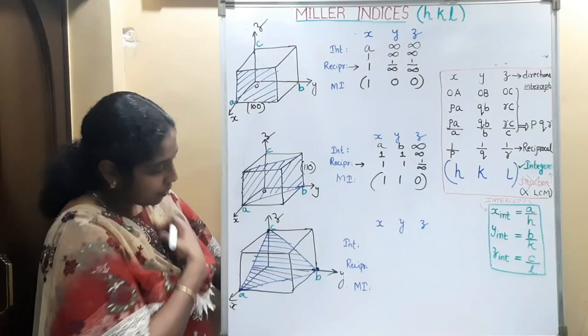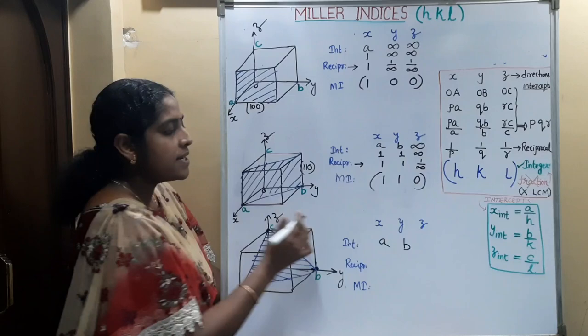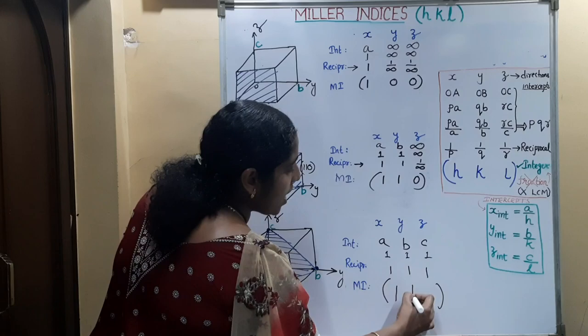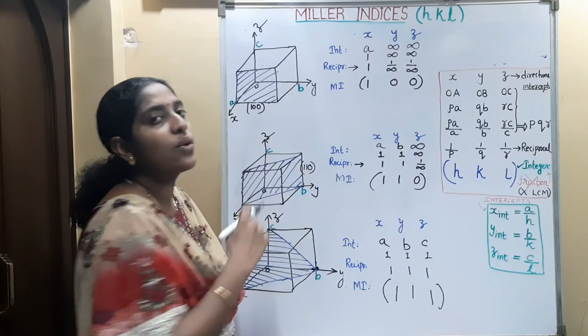For the third plane, which is triangular in shape: the x-intercept is A, y-intercept is B, and z-intercept is C. The coefficients are 1, 1, 1. Taking the reciprocal gives 1, 1, 1. So the Miller indices are (1, 1, 1). To summarize: the first plane is (1,0,0), the second is (1,1,0), and the third is (1,1,1).